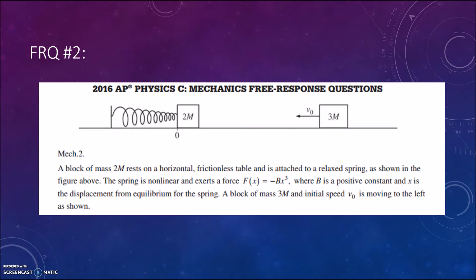This question talks about a block of mass 2m which is attached to a spring and is at rest at the beginning. And then you have another block of mass 3m which is moving with an initial velocity of v₀ to the left which is going to collide with this block of mass 2m in a perfectly inelastic collision, which means that they stick together after the collision.